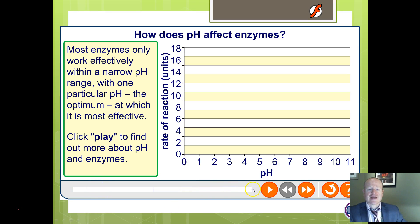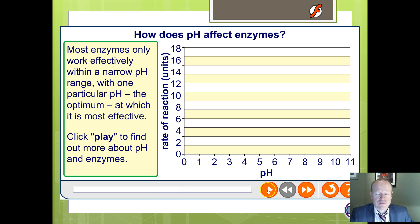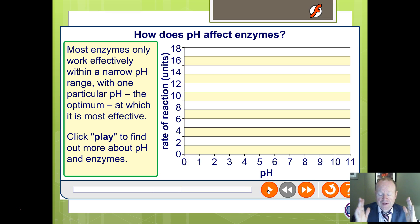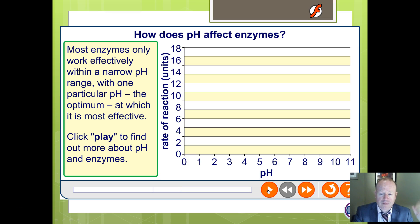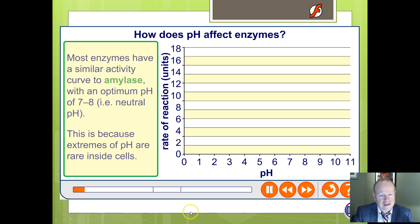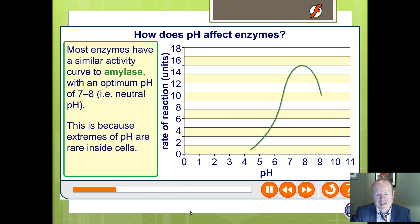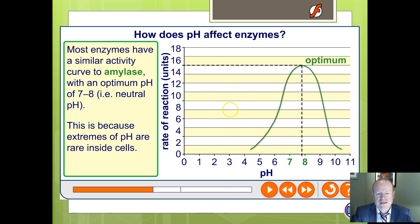So how does pH affect enzymes? Most enzymes have a fairly narrow pH range in which they work best — in other words, there's an optimum and a small range in which they work well. Outside of that range, they don't work particularly well. For example, amylase works best at around pH 6.8 to 7.